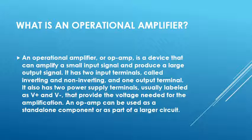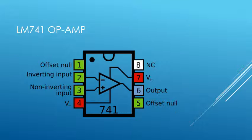An op-amp can be used as a standalone component or as a power amplifier. IC741 pin configuration: pin 1 is offset null, pin 2 is inverting input, pin 3 is non-inverting input, pin 4 is ground, pin 5 is offset null, pin 6 is output, pin 7 is Vcc, and pin 8 has no connection.